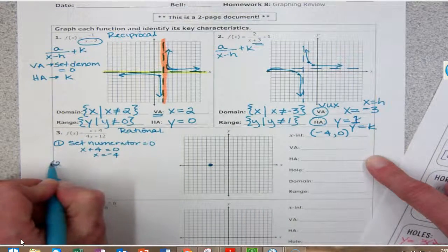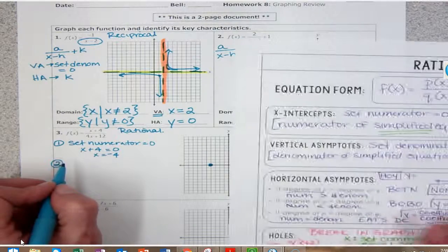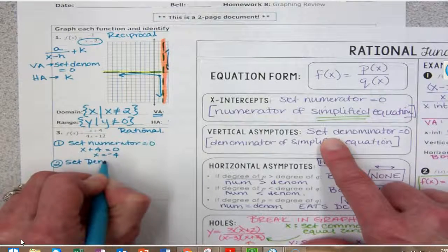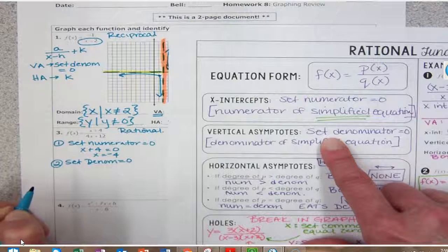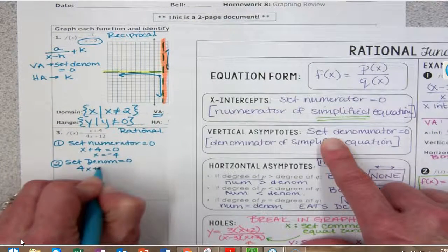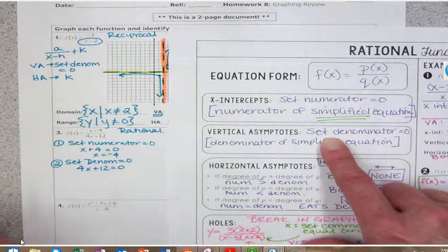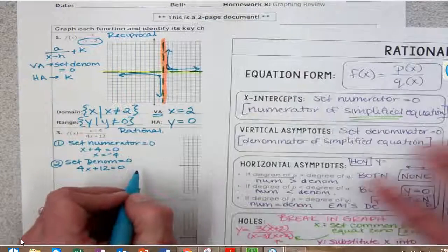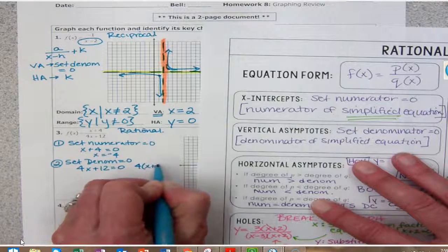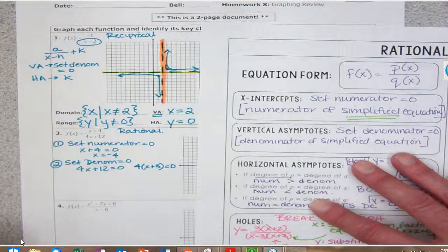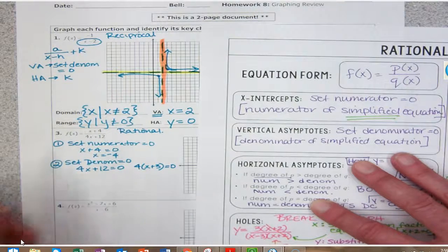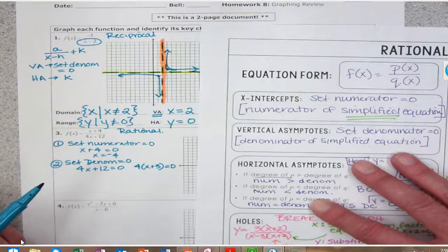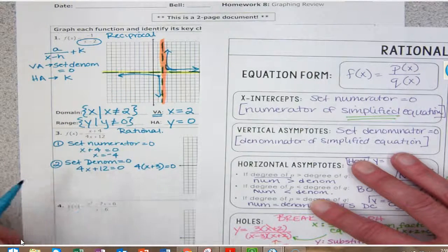Right there, and I can put this on negative four zero. Don't just put negative four, it's a point. Put that like that. Step number two, vertical asymptote: set denominator equal to zero. 4x plus 12 equals zero. Now you can factor this but you don't have to. If I factor it, I'm going to get 4x plus 3 equals zero. You can solve that the exact same way. Since I can't cross anything out, which I should have done at the beginning but I knew I didn't have to do that, since I can't cross anything out, I'm just going to set these equal to zero.